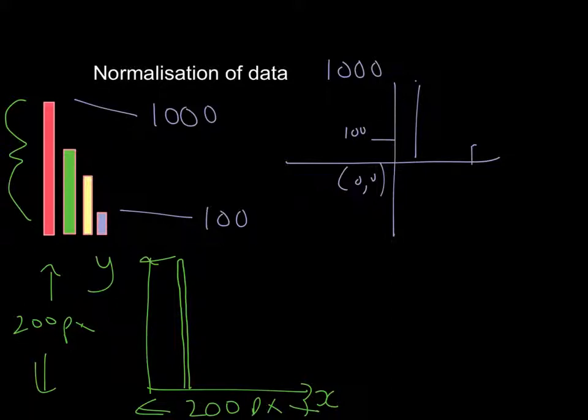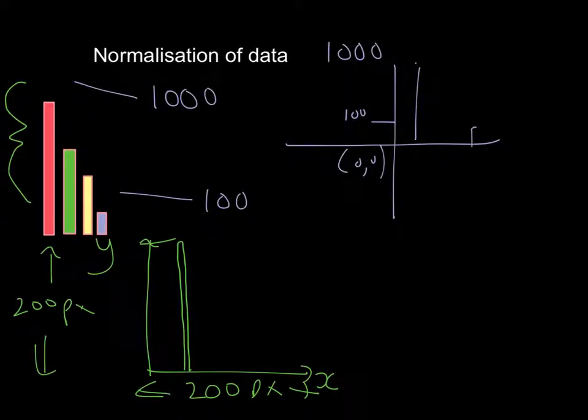And then, correspondingly, I will have my hundred value, which is my lowest value here, about here. And this is 200 pixels.